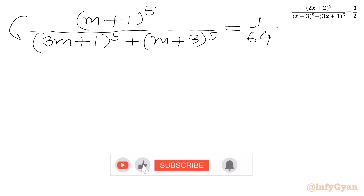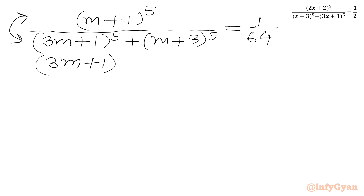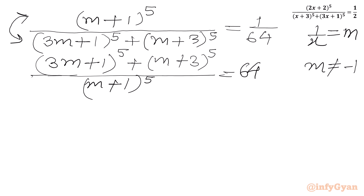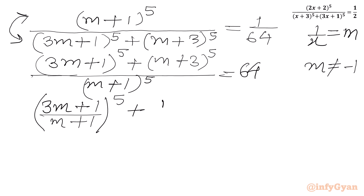Now we will flip numerator and denominator, taking the reciprocal of both sides. So we write (3m+1)^5 + (m+3)^5 over (m+1)^5 equal to 64. Since x cannot be negative 1, and our substitution was 1/x = m, m cannot be negative 1. We can rewrite this as (3m+1)/(m+1) whole power 5 plus (m+3)/(m+1) whole power 5 equal to 64.